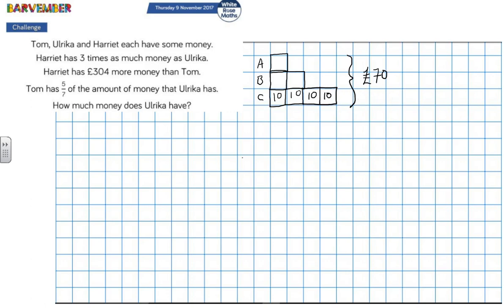Okay, so that's how I usually like to work these problems, try to figure out what the base unit is. So, let's have a look. Harriet has three times as much money as Ulrika. So, Harriet has more than Ulrika. Harriet has £304 more than Tom. So, Tom has less than Harriet also. And Tom has five-sevenths of the amount of money that Ulrika has. Ah, okay, so Tom has the least amount of money, but we've been told how much he has in relation to Ulrika.